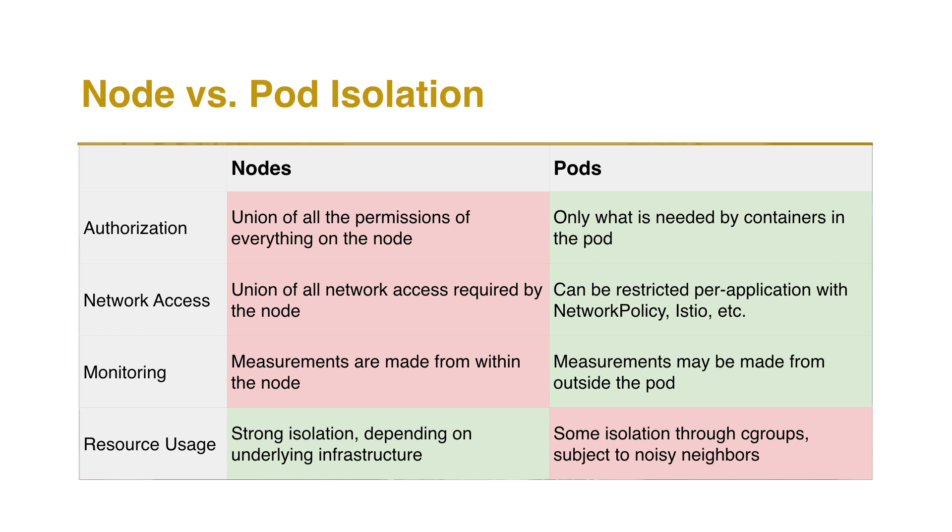We also talk about some alternatives. The node is really complicated — there's a lot going on. An attacker who has compromised the node has access to the union of all the different things that the node is using. They have a pretty large toolkit, even if you're running least privileged. We compare what the attacker has access to at the node level with what they have access to in the pod, which you can scope down much more. This slide summarizes the differences.